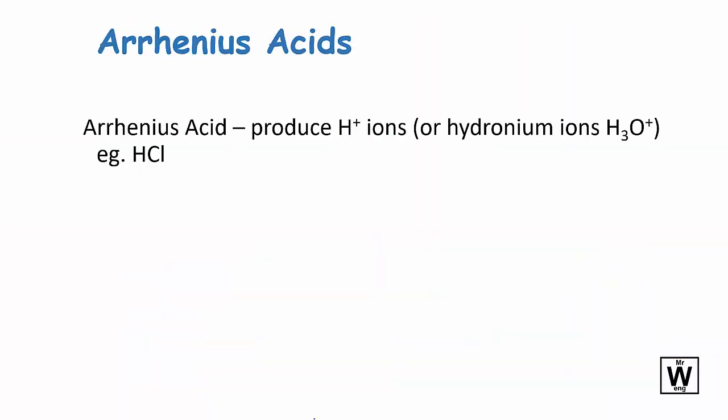An Arrhenius acid is basically the first model you'll get taught in junior science. When you get to senior science, you may get to the Bronsted-Lowry or Lewis more advanced models, but basically all you need to know for the moment is an acid is anything that gives off H+.